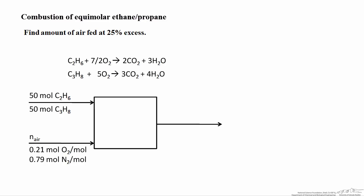Let's look at one more example with an equal molar mixture of ethane and propane. On the inlet side we have 50 moles of each. The air fed has the same composition and is fed at 25% excess. We want to find the air fed for a mixture of two fuels. Since partial combustion reactions don't matter, we use the complete combustion reactions for both ethane and propane, and find the theoretical oxygen required to burn 50 moles of ethane plus 50 moles of propane.